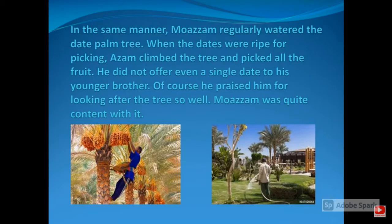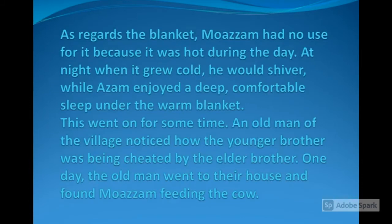In the same manner, Moazam regularly watered the dead palm tree. When the dates were ripe for picking, Assam climbed the tree and picked all the fruit. He did not offer even a single date to his younger brother, but of course he praised him for looking after the tree so well, and Moazam was quite content with it.